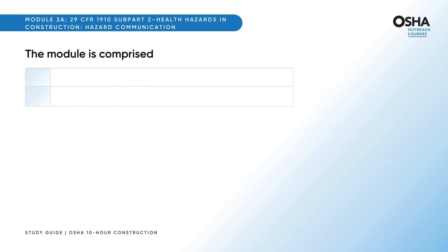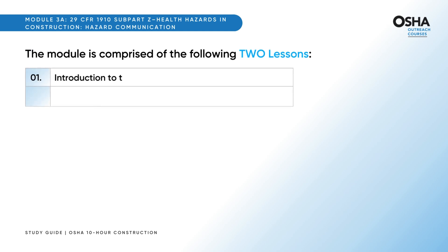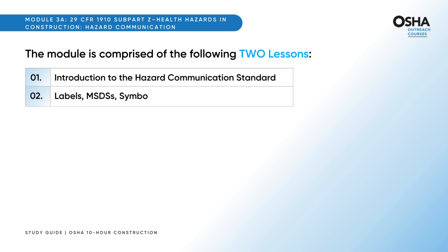The module is comprised of the following two lessons. First, Introduction to the Hazard Communication Standard. Second, Labels, MSDSs, Symbols, Hazards, and Training.